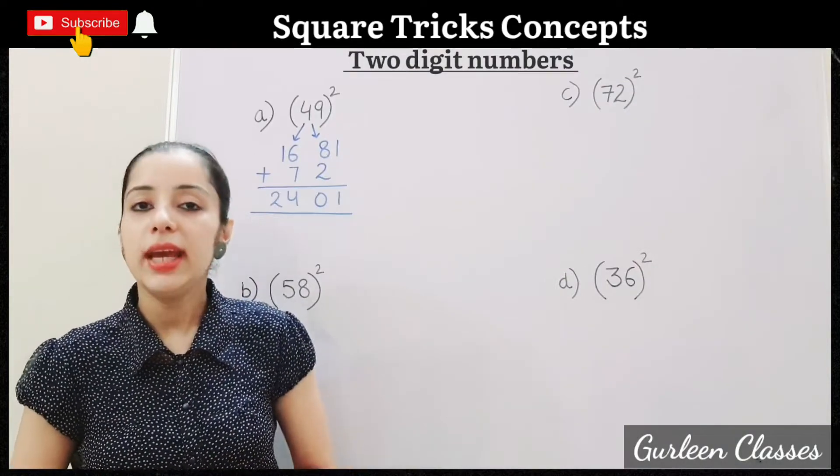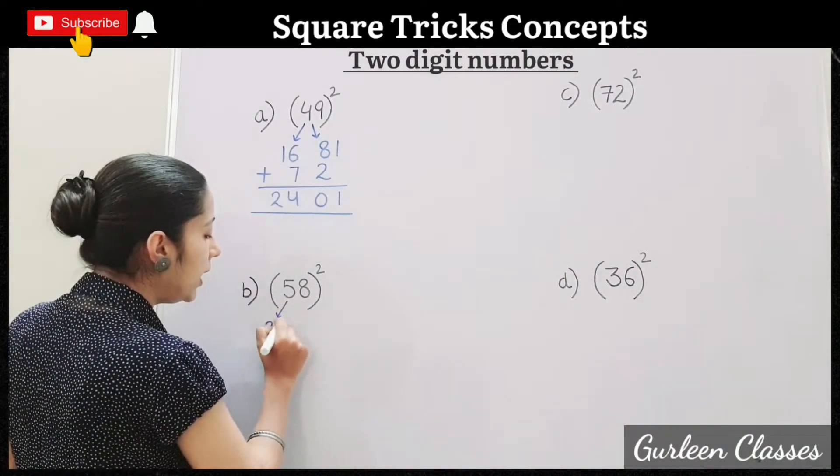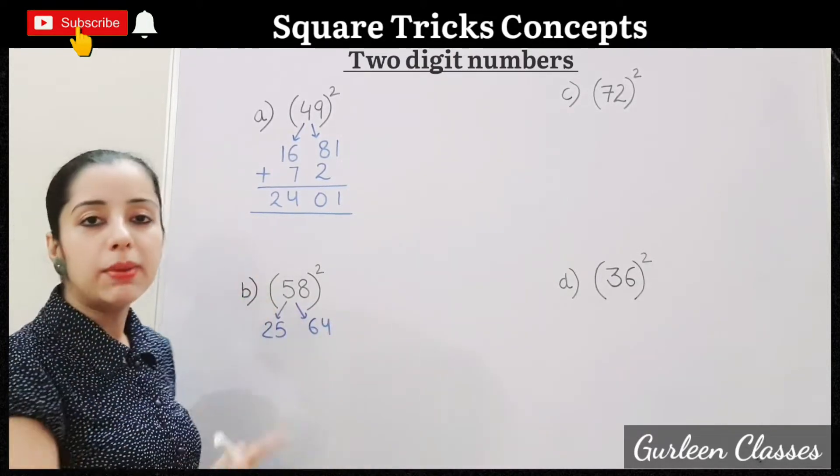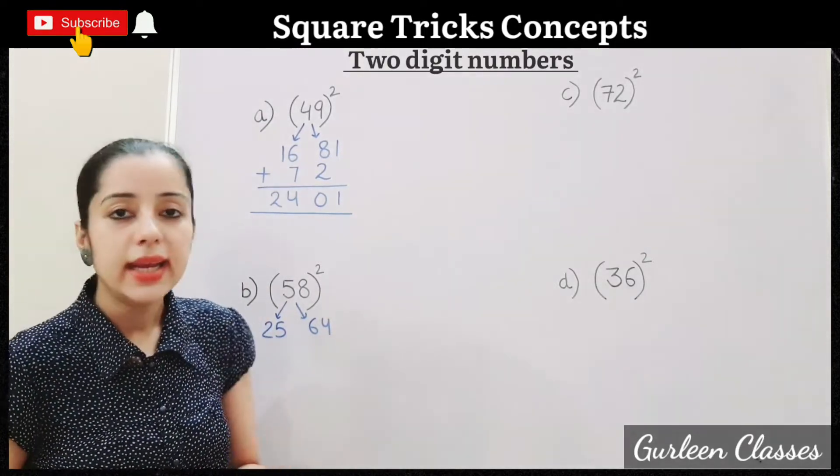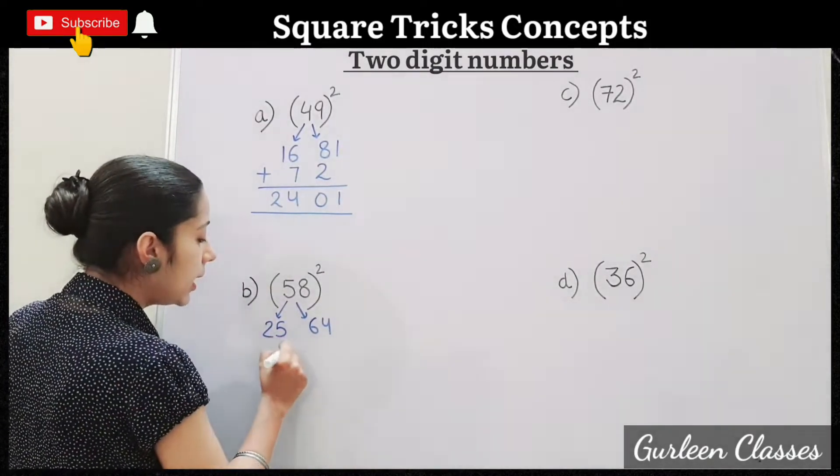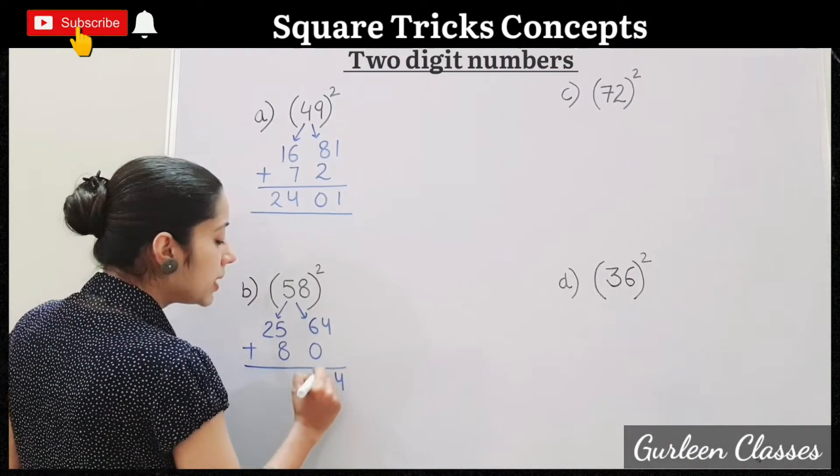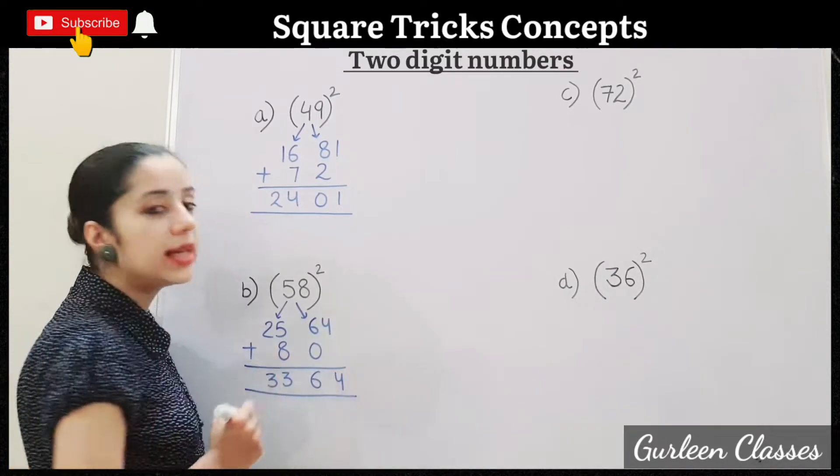B. 58 square. So 5 square will be 5 fives are 25. 8 square, 8 eights are 64. Second step, multiply 5 into 8, 40. 40 into 2, 80. So write here 8, 0. Third step we will add. 4, 6, 13, 3. Answer is 3,364.